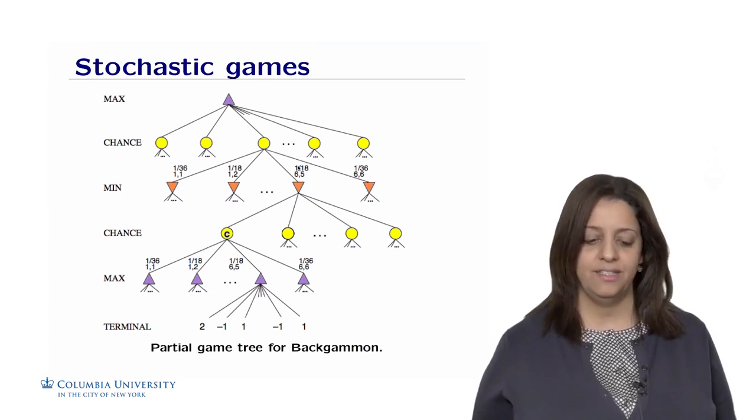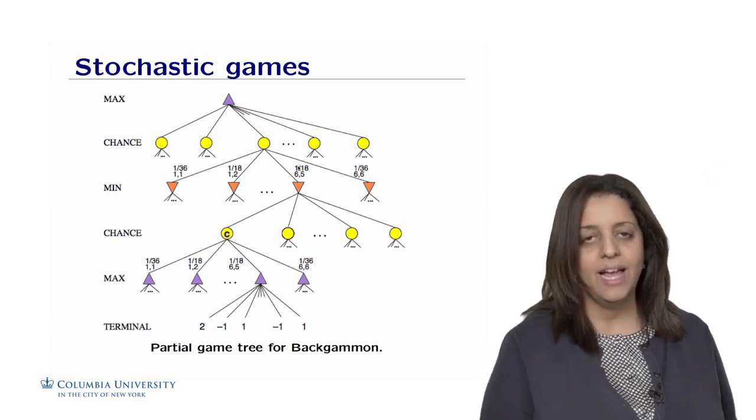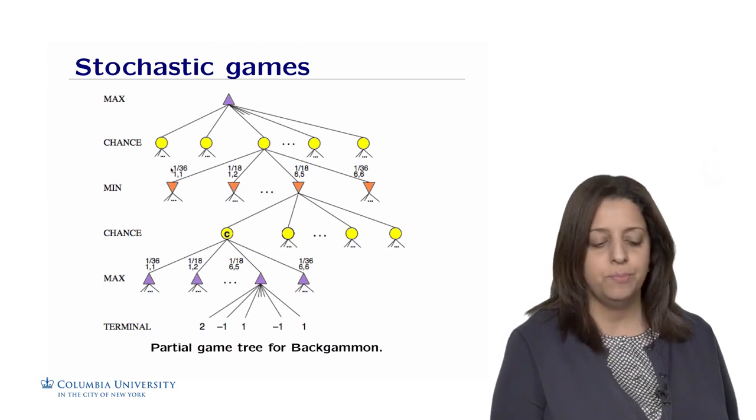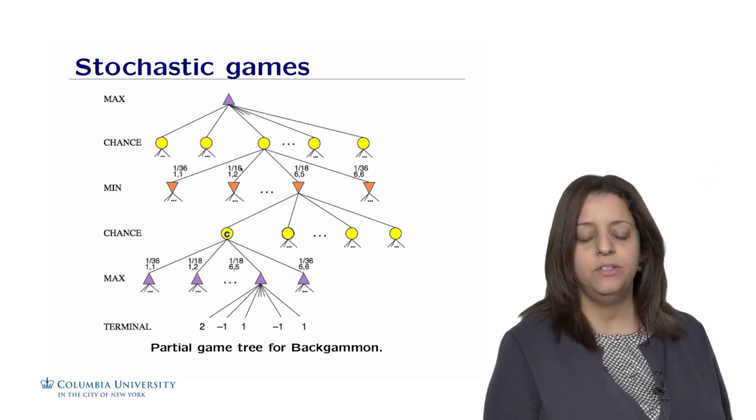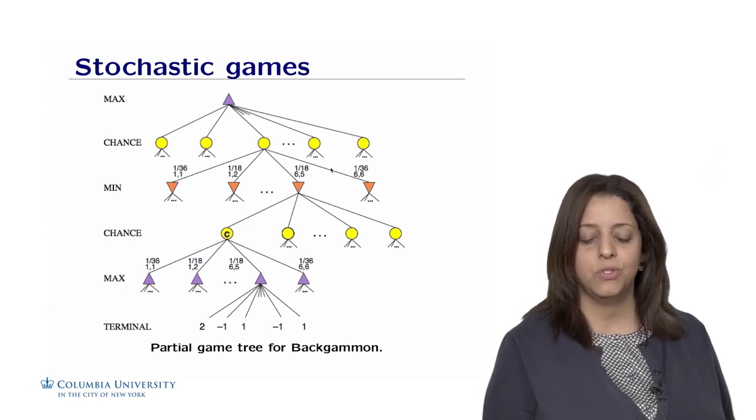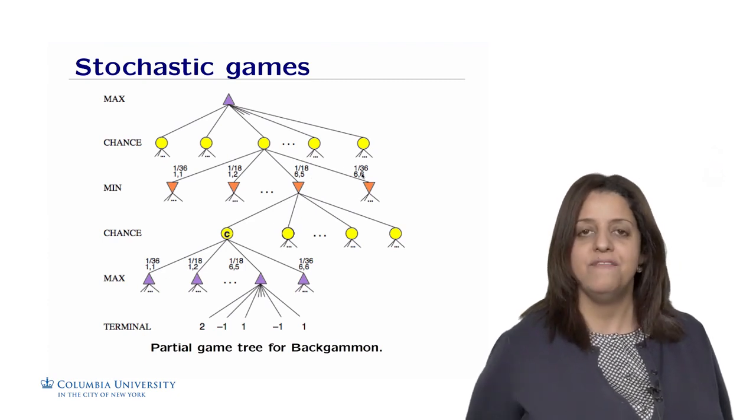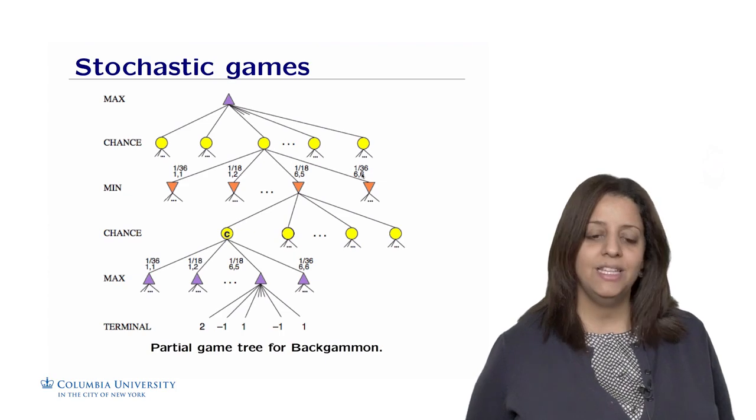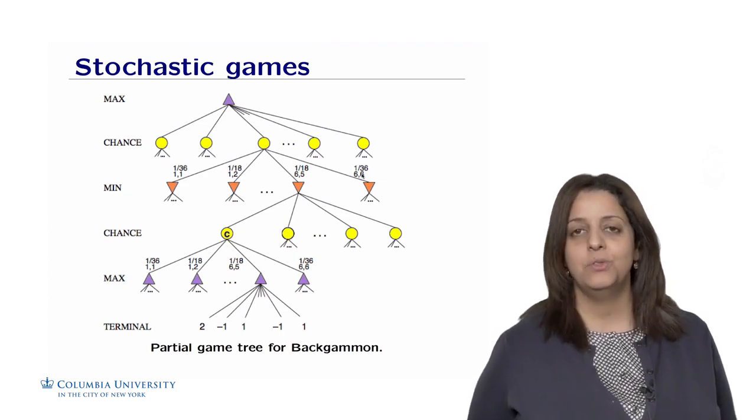Each of the yellow circles has some branching factor that shows the possible outcomes of rolling dice or shuffling a card. For example, for the backgammon game, we could have 1,1 with a probability of 1 over 36, or 1,2 or 2,1 with a probability of 1 divided by 18, and so on. We're going to put all the possible outcomes weighted by the probability of the event happening. We need to take into consideration this new element to find the best solutions for max.